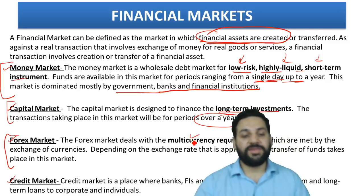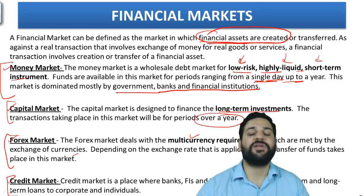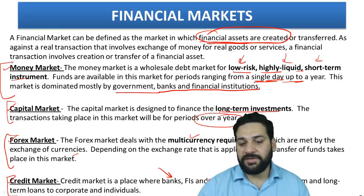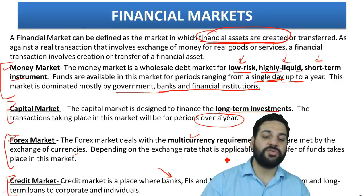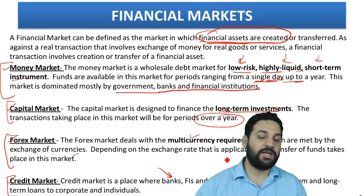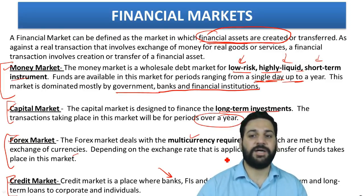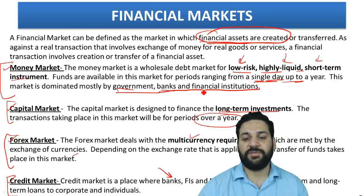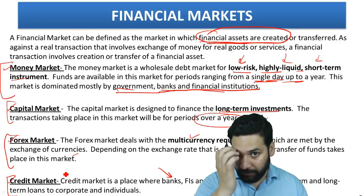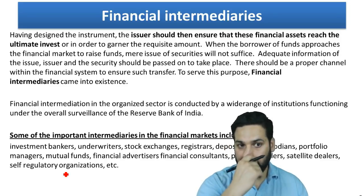The forex market deals with multi-currency requirements, which are met through exchanges of currency. The credit market is for the general public and companies — it is a place where banks, financial institutions, and NBFCs provide short, medium, and long-term loans to corporates and individuals, such as home loans, business loans, and personal loans. The capital market serves companies and governments, where companies can issue shares and governments can issue bonds.